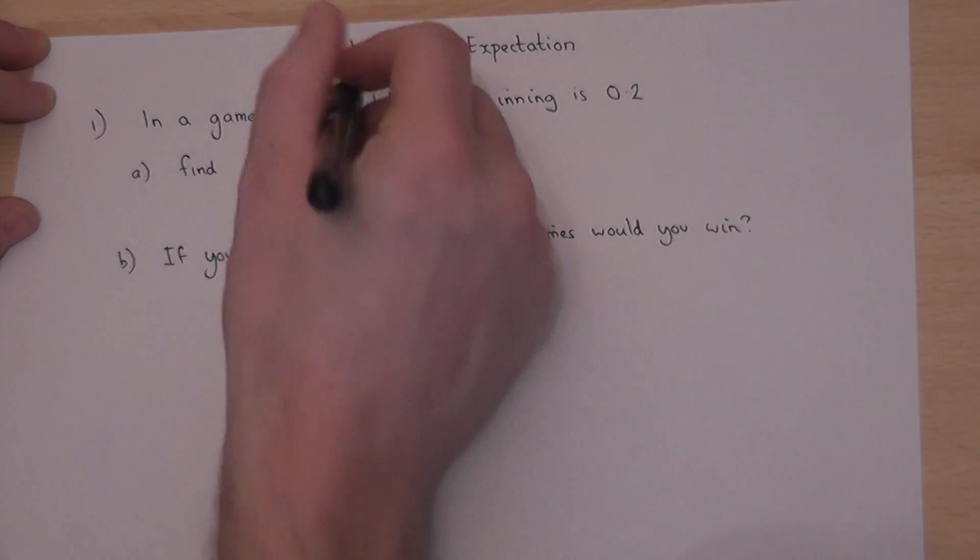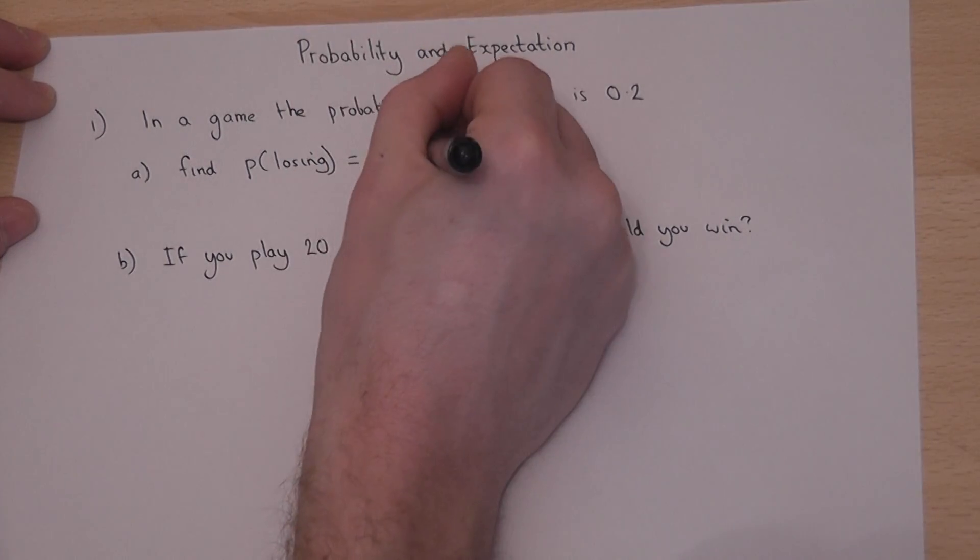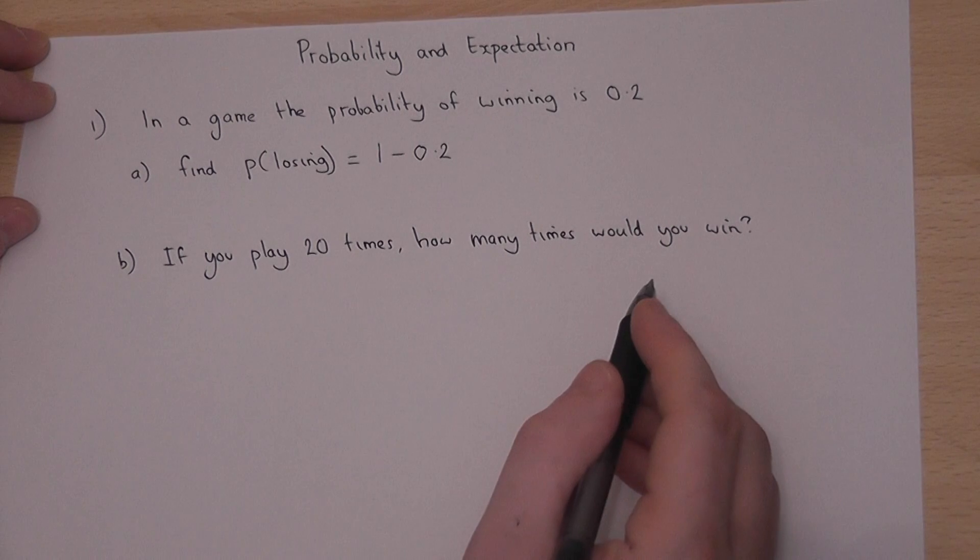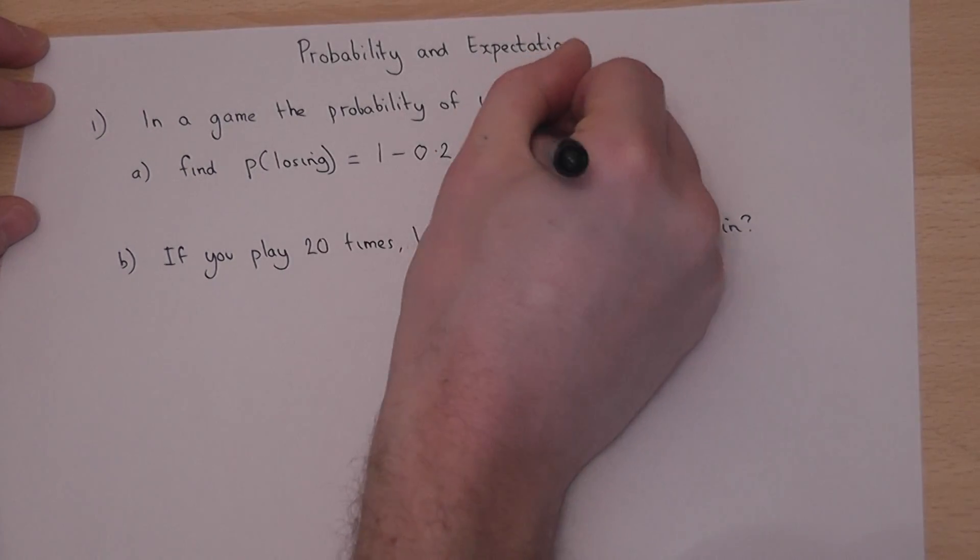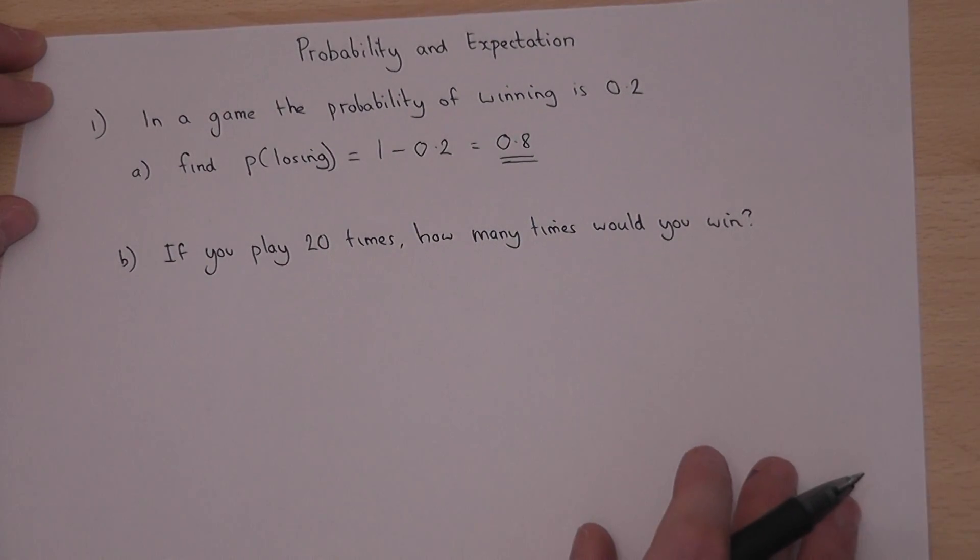Then to find the chance of losing, all we do is we do 1 minus the chance of winning, because all the options always add to 1. So that leaves us with 0.8, which means quite simply that for every 10 games you play, you'd expect to lose 8.